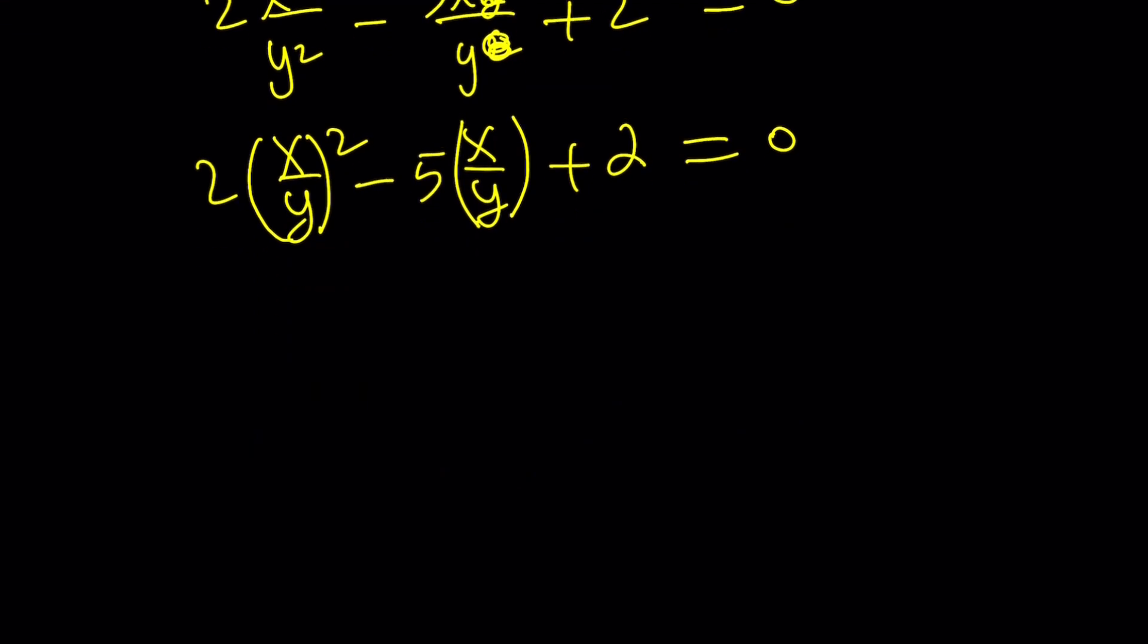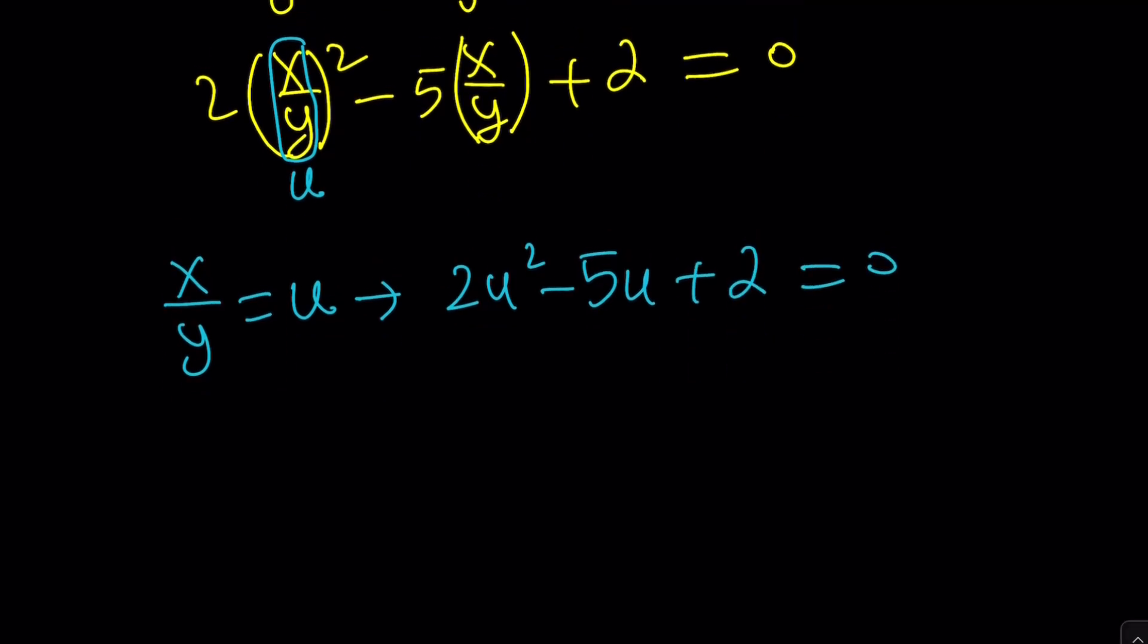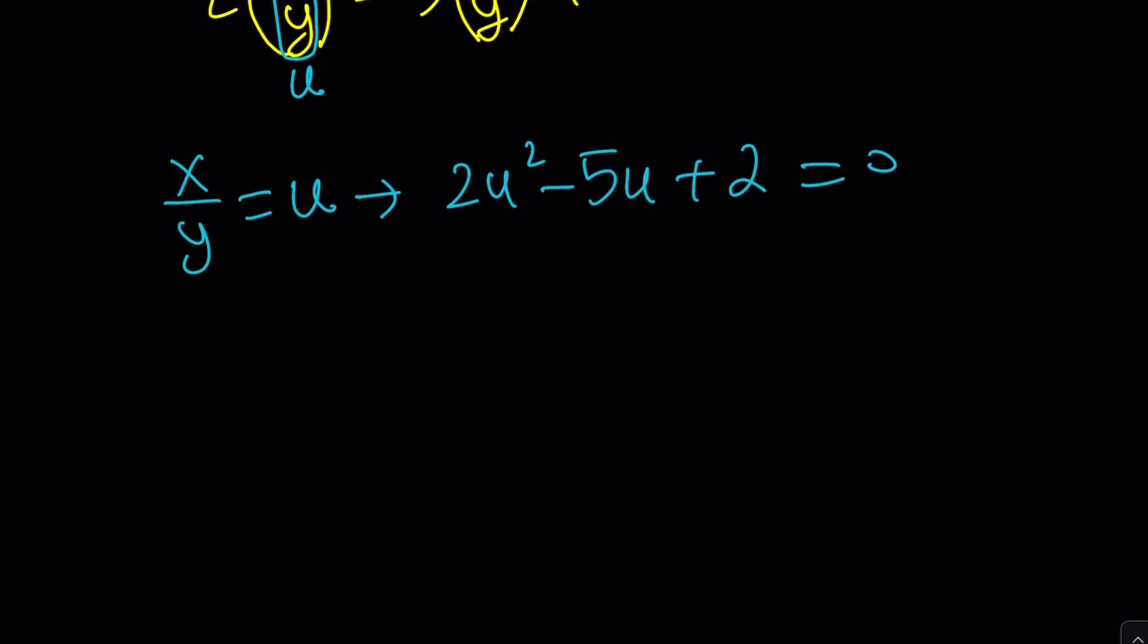So, let's go ahead and use substitution. How about calling x over y, what should we call it? How about u? Okay. So, x over y equals u. And this equation becomes 2u squared minus happy birthday, 2u squared, if it's your birthday, plus equals 0. And this equation can be solved easily. The discriminant is a perfect square, right? You can do it.